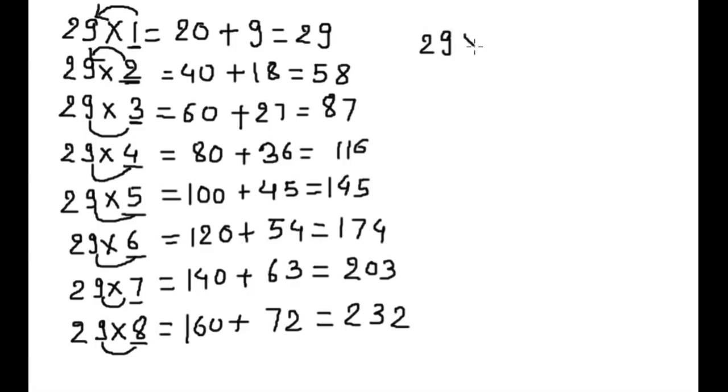29 into 9. Double of 9 is 18. Put 0. Plus 9 into 9 is 81. It is 261.